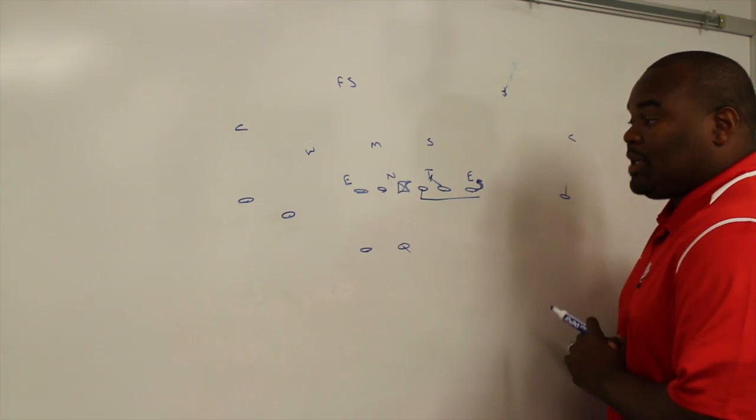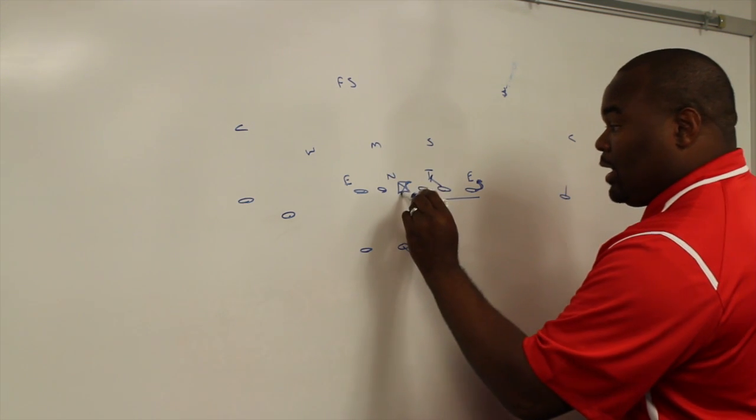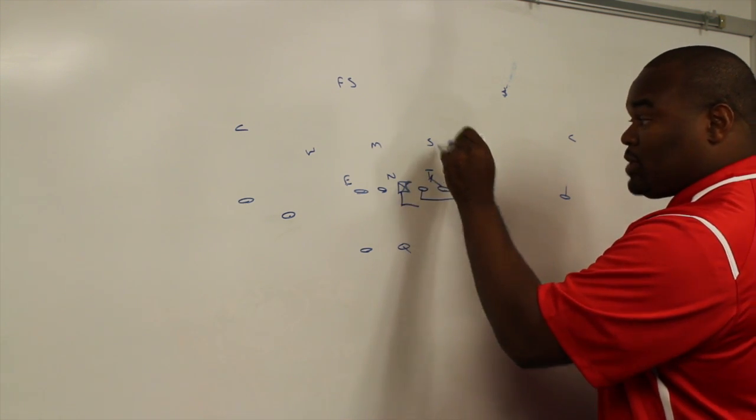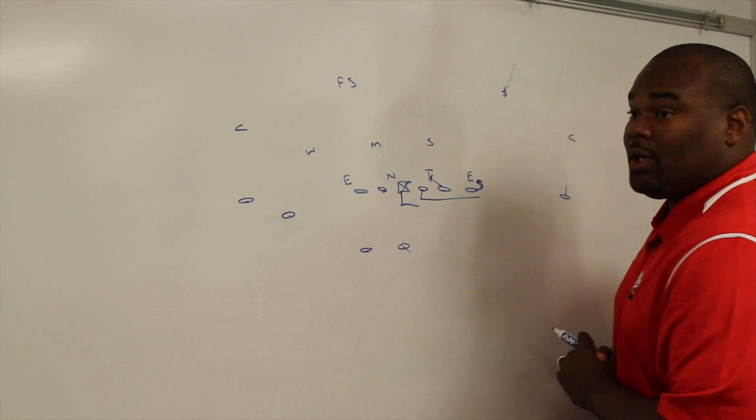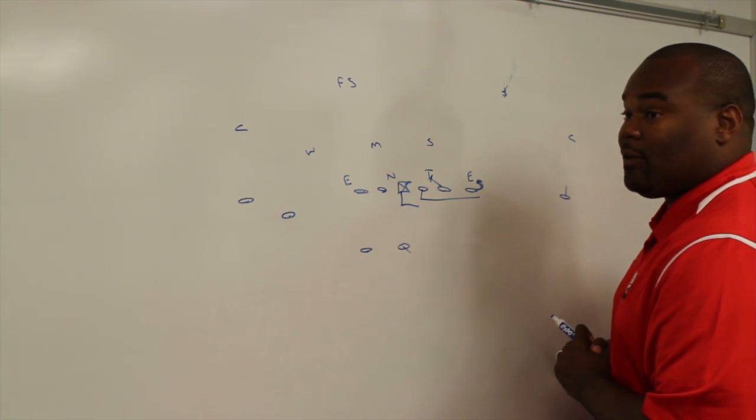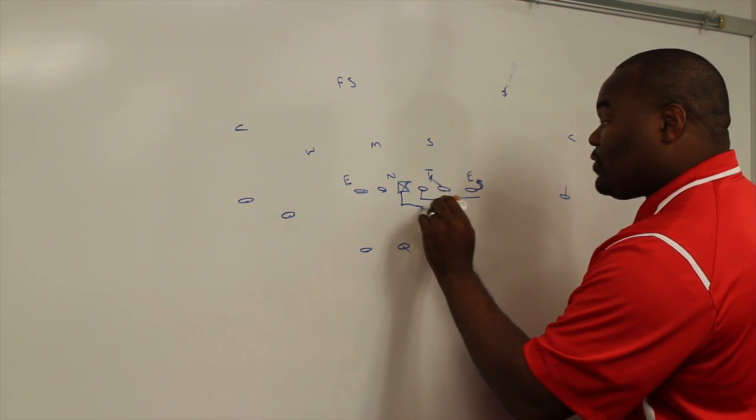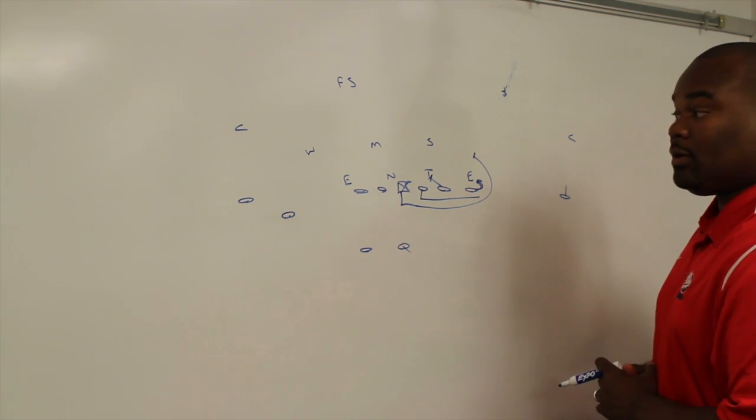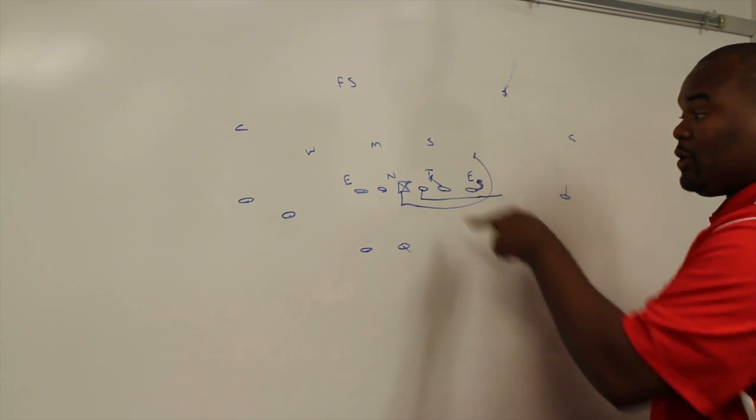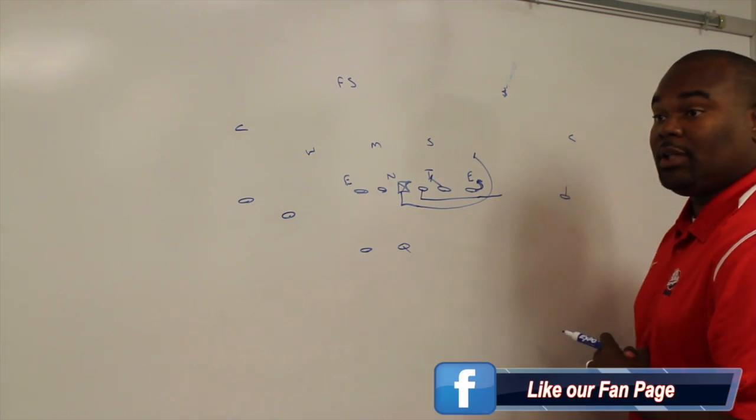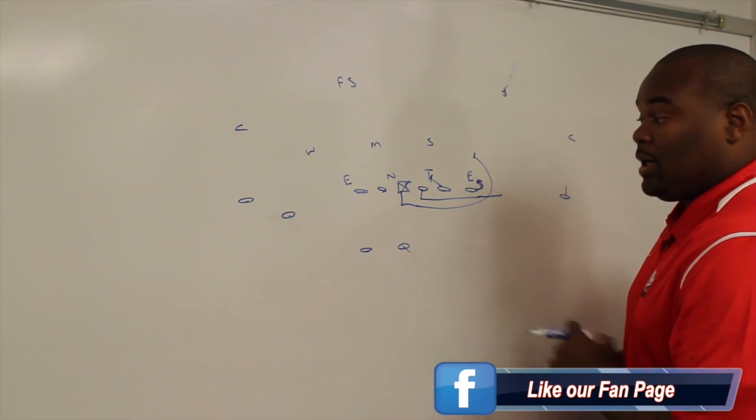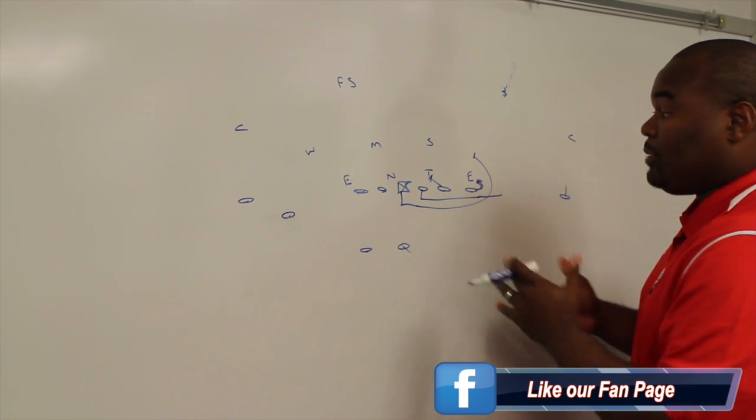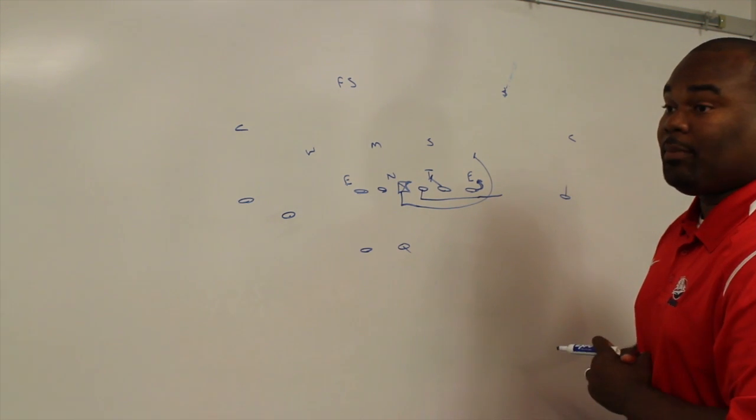The second puller for us will be the center. He's going to pull, and what he's going to look for is, first and foremost, any run through. Any linebacker that runs through, he's going to look to block that and take care of the run through. If he gets around the edge, he's going to look to seal in the linebacker. It's the ability of the first puller to read the block on the defensive end from the tight end, and the responsibility of the center, if he's not blocking run through, to read the block from the guard or whoever the first puller may be.